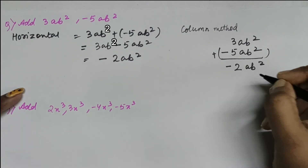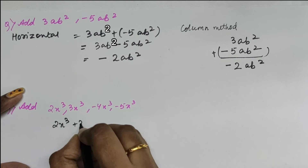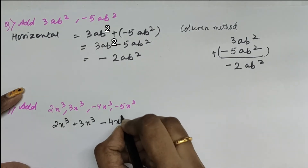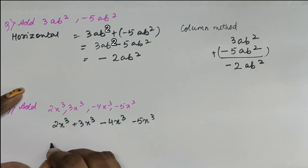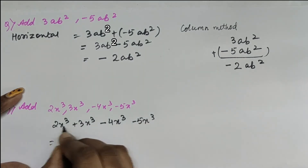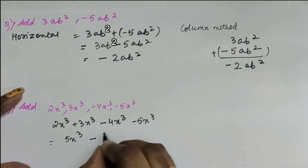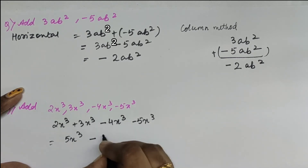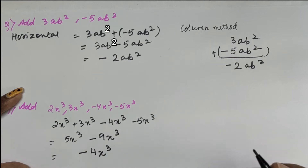Let us try another question: 2x³ plus 3x³ minus 4x³ minus 5x³. We put everything in a single line and add the terms. We get 5x³ and then minus minus — we add the terms to get 9x³ — but the symbol is minus, so the final answer is minus 4x³.